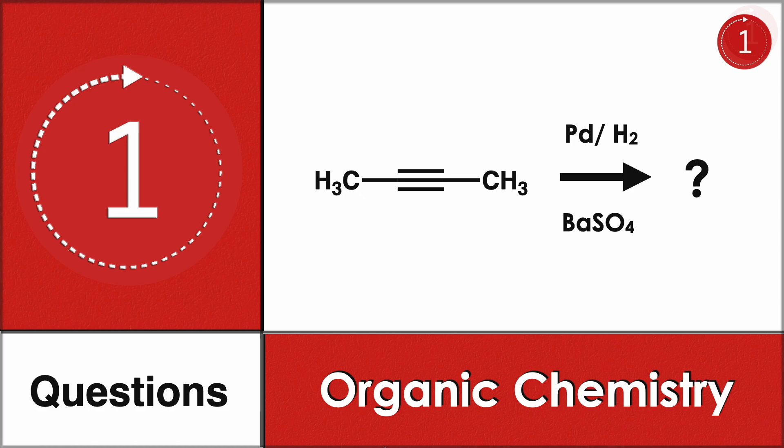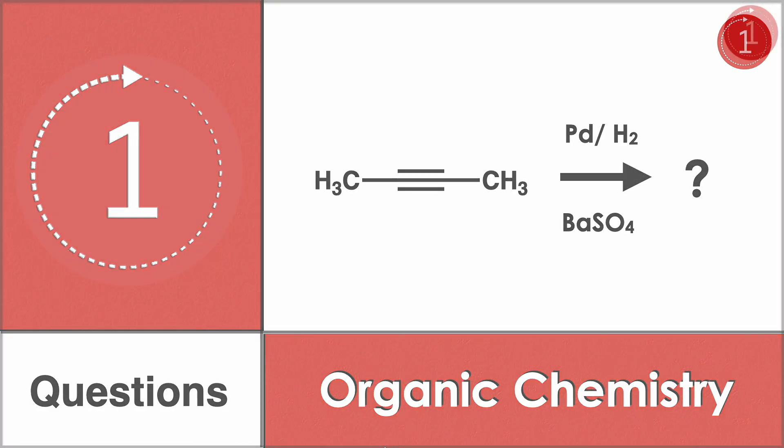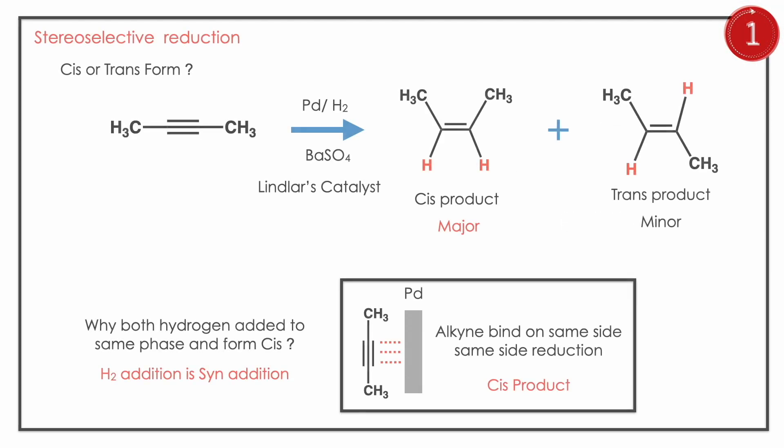Welcome to One Chemistry. This is the organic chemistry series — daily one question for you. Here you have an alkyne with two methyl groups. You are reacting it with palladium, hydrogen, and barium sulfate. You have to find what the final product will be. You have an alkyne in the system and you are reducing it — you should find whether a cis or trans alkene forms.